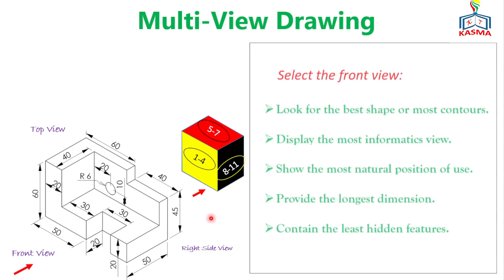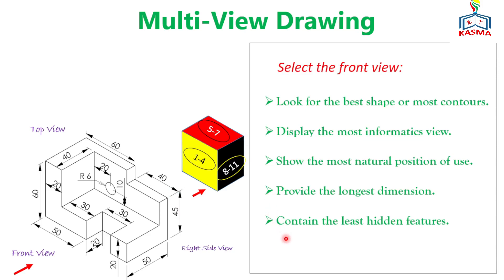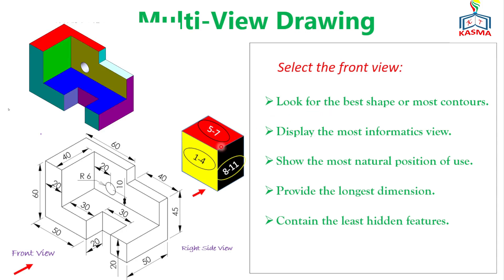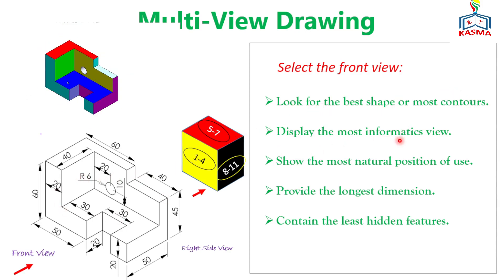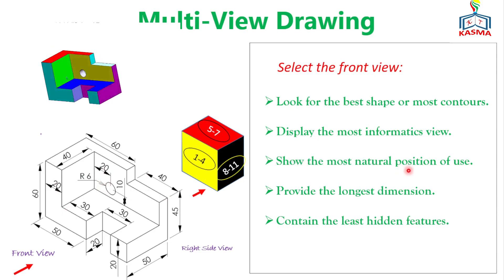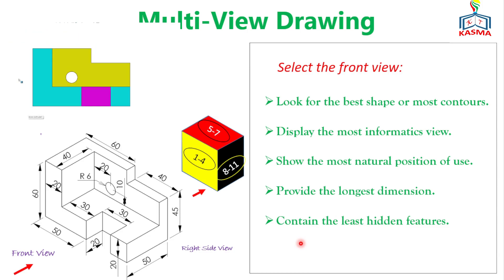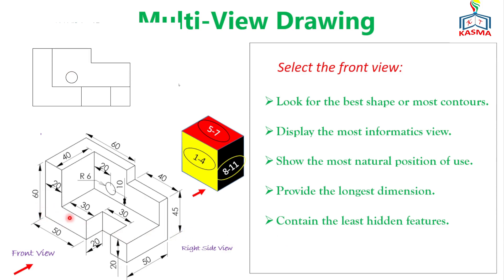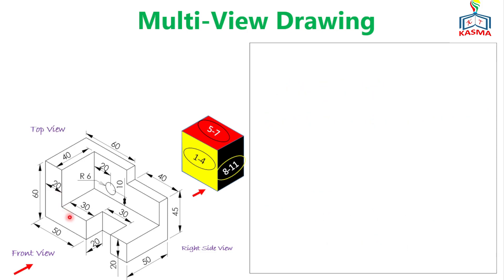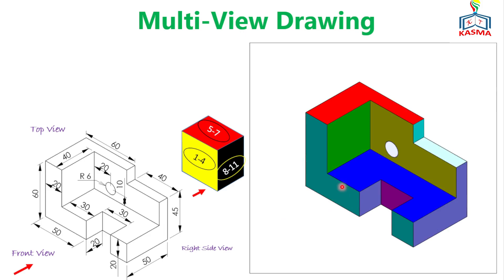There are different criteria for selecting a front view. The object should show the best shape, the most contrast, and display the most informative view. It should show the most natural position, provide the longest dimension, and contain the least hidden features. Different criteria will be applied, and sometimes the front view is given to you. In this case, this part will be the front view because it has a long dimension and gives more information, especially showing the circular feature.